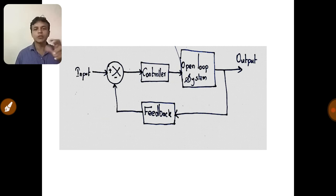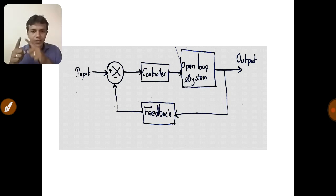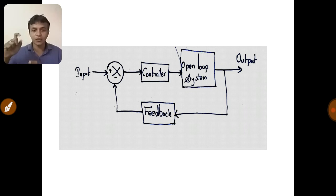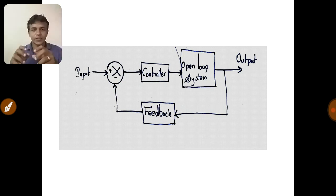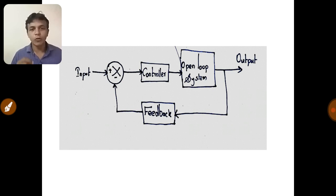In a closed loop system, it is much more complex than the open loop system. The difference is that from the output, some signal is taken and it is fed back. There is a controller — an error detector — which analyzes the input and the feedback signal, and accordingly controls the system to get the desired output. The main difference between open loop and closed loop is the feedback.